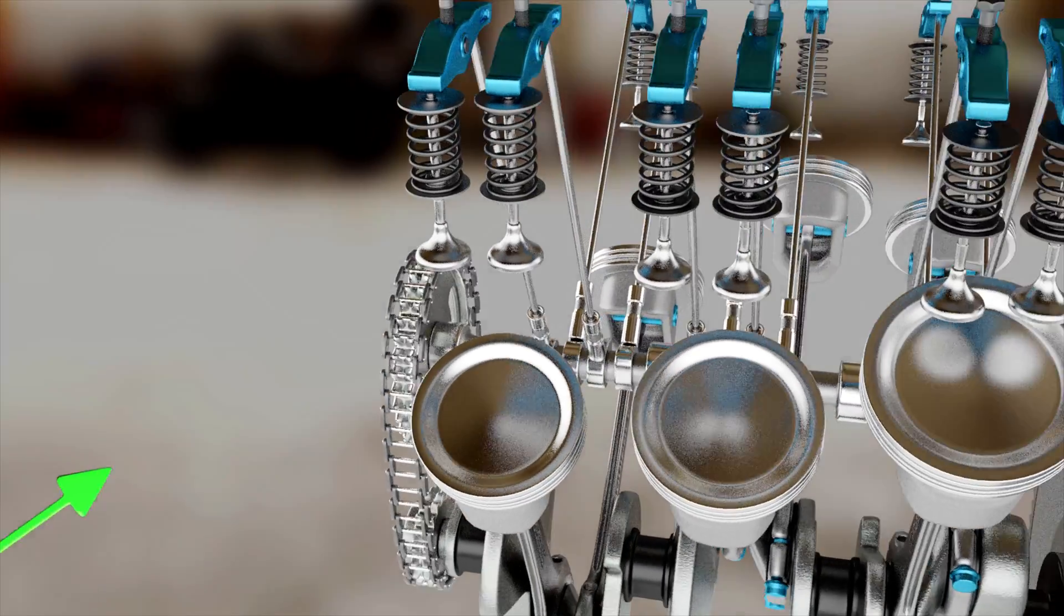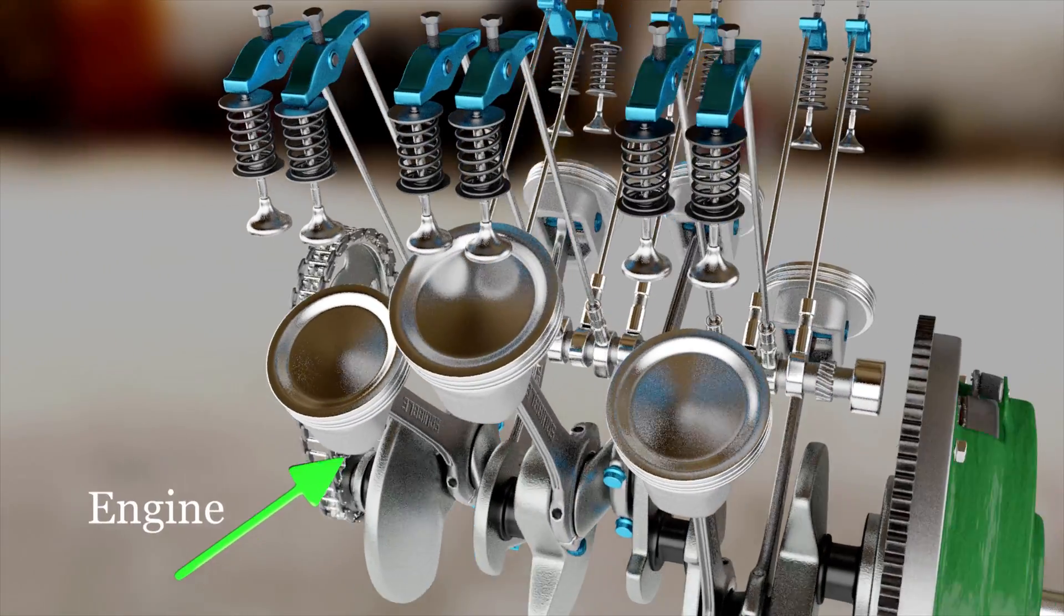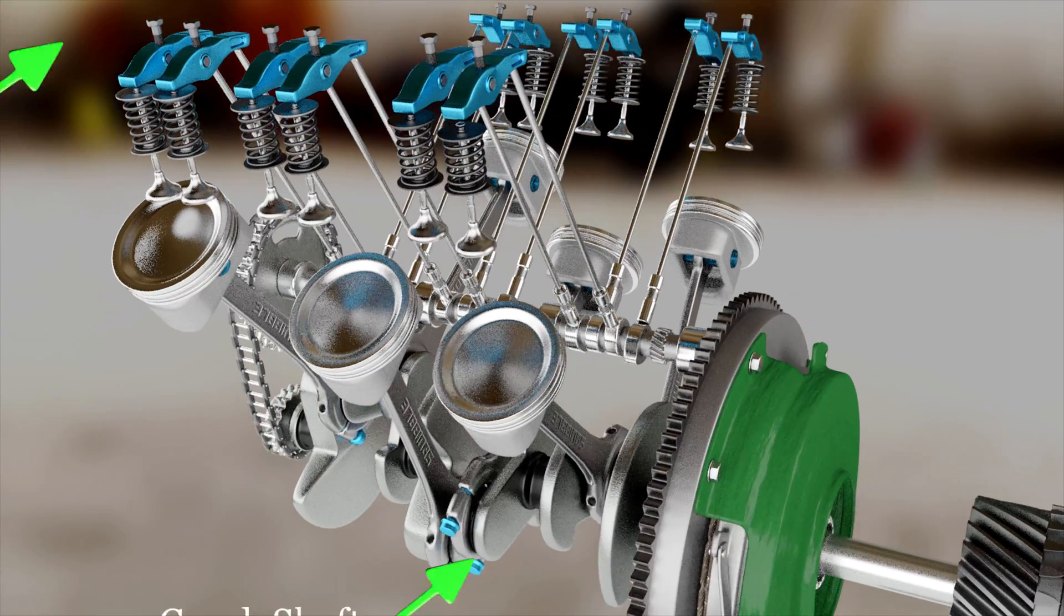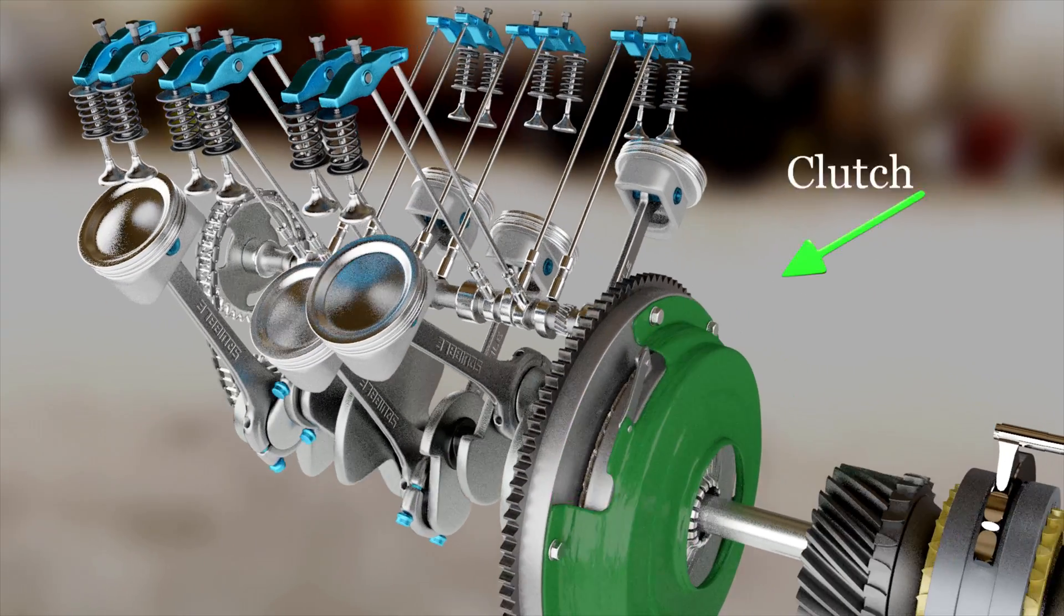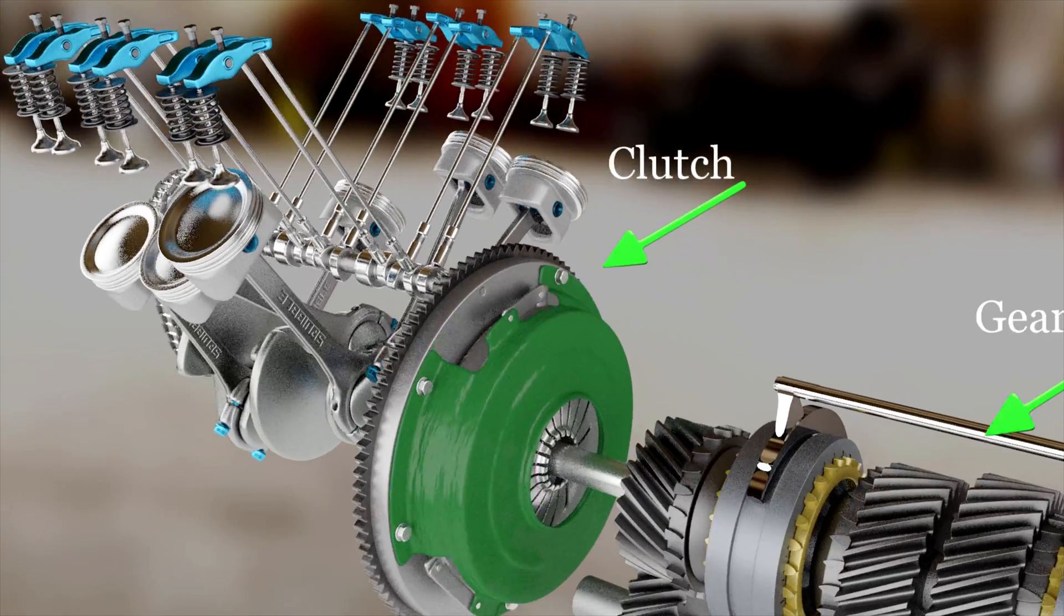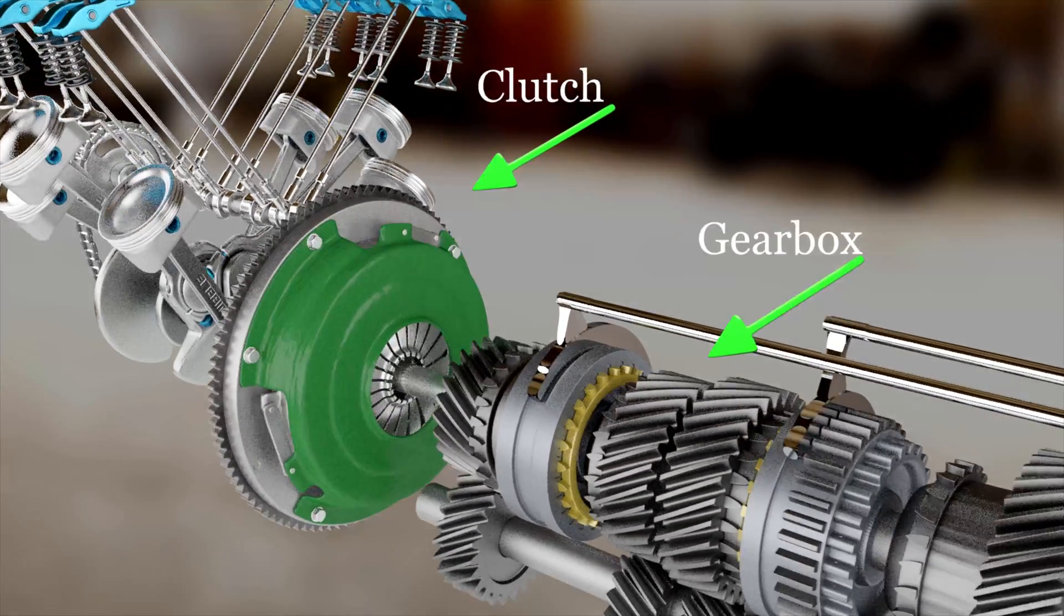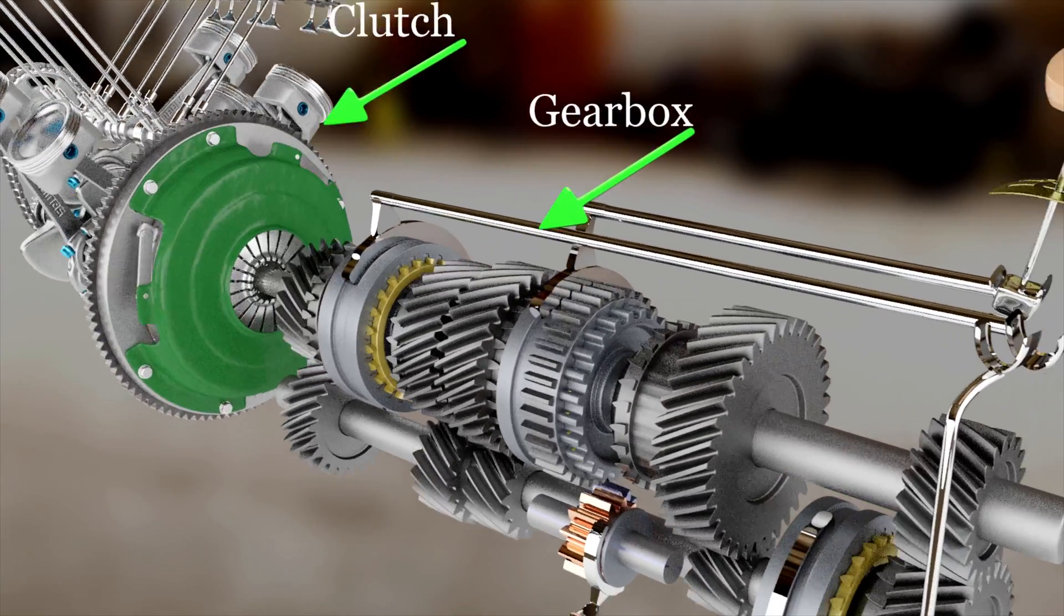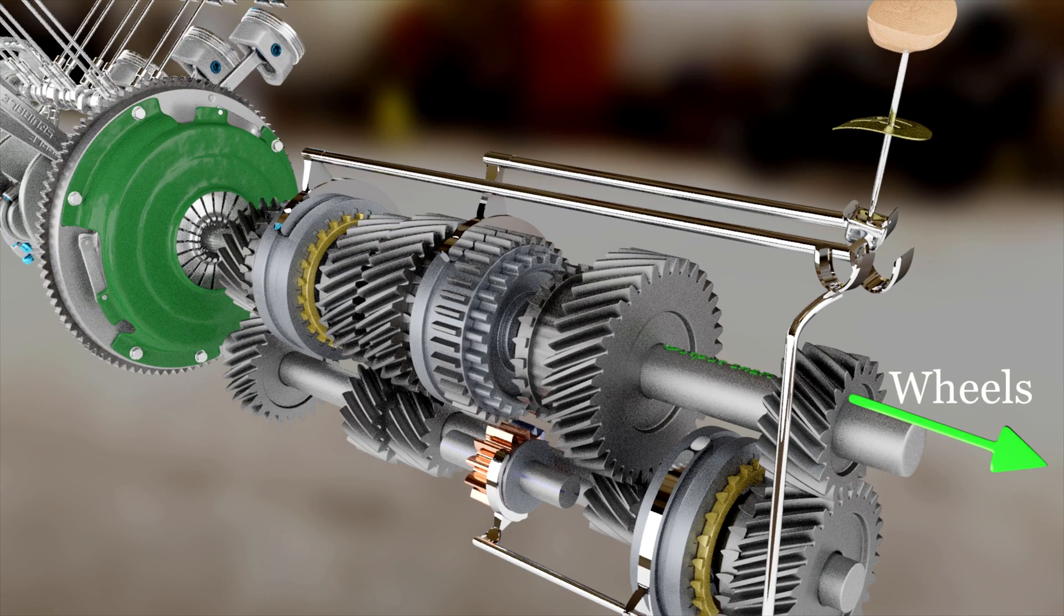As we know, the power is developed in the engine of an automobile and causes the crankshaft to rotate. The power from the crankshaft is transmitted to the gearbox through the clutch. Finally, it reaches to the road wheel following the propeller shaft and differential.